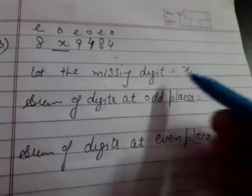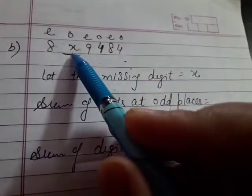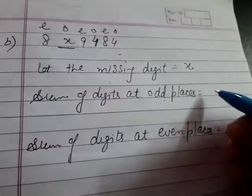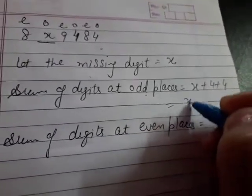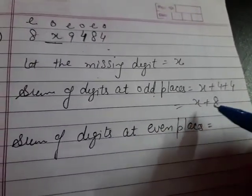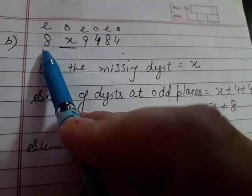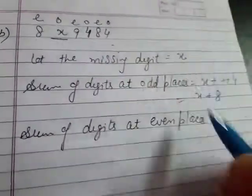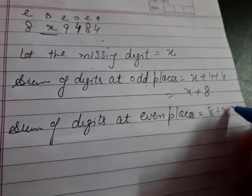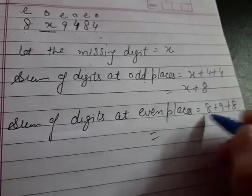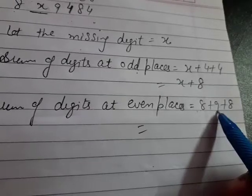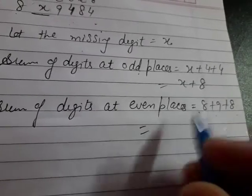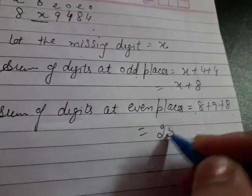Let's find the sum of digits. So at odd places, the digits are x, 4, 4. So x plus 4 plus 4, what does this become? x plus 8. At even places, the digits are 8, 9, 8. So 8 plus 9 plus 8, what does this become? 8 and 9 is 17, 17 plus 8 is 25.